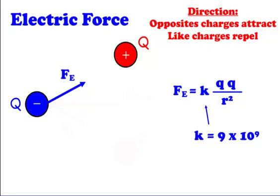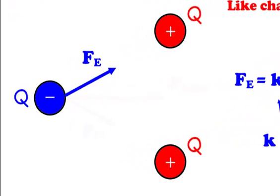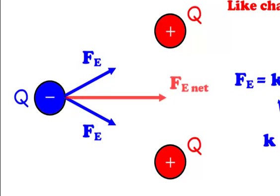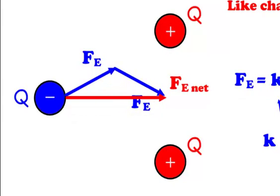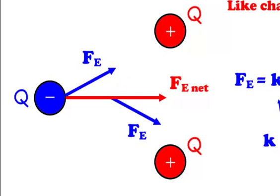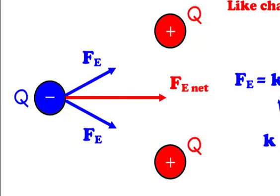Now, what would happen if I had another positive charge down here? We're going to take one at a time. This blue charge will also be attracted to the other charge — attracted to the top red charge and attracted to the bottom red charge. Which means, if we add both these vectors up, you can see there's a net force propelling this negative blue charge to the right. If I add both those vectors up, you can see the y-components end up canceling out — it's the x-components that add up together.